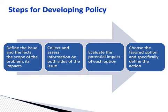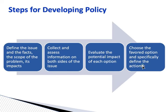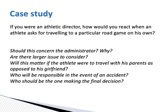How are we going to develop a policy? There are four steps. The first step is to define the issue, look at the scope of the problems, and understand its impact. During this process, we need to collect a lot of information from both sides to help you understand the problem fully — it's not just listening to one side of the story. You actually collect information from both sides to get an idea of how you're able to handle it. Then we're going to evaluate the potential impact of each of the options, choose the favorable option, and define the specific actions.